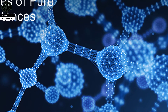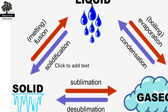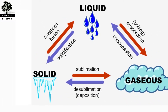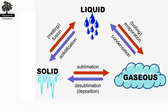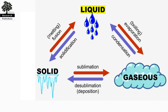Moving towards the phases of pure substances — in practical situations, generally two phases of a pure substance coexist in equilibrium. Water exists as a mixture of liquid and vapour in the boiler and the condenser of a steam power plant. The refrigerant turns from liquid to vapour in the freezer of a refrigerator. A saturation state is a state from which a change of phase may occur without a change of pressure or temperature. Phase change occurs at constant pressure and temperature.